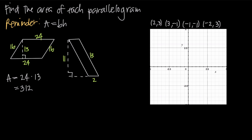In the second example, we have another parallelogram where the base is 2. So the area is going to be 2 times whatever the height is. We've been told the slant height is 13, but remember, we're not interested in the slant height. We're interested in the vertical height, which is 11. So we multiply 2 by 11, and the area is 22 square units.